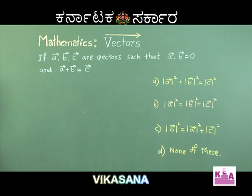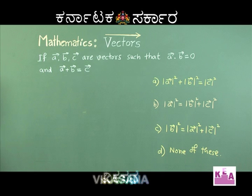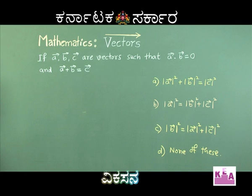Next question: if vector A, vector B, vector C are vectors such that vector A dot vector B is equal to 0, and vector A plus vector B is equal to vector C. Option A: magnitude of vector A squared plus magnitude of vector B squared is equal to magnitude of vector C squared.